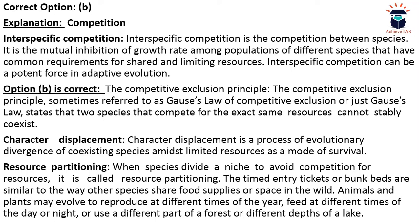In a forest ecosystem, not every species is in constant competition. Resource partitioning takes place in which species change their feeding practices and reproduction practices — for example, one species reproduces in spring and another in autumn, or they reside in different parts of the forest. This is called resource partitioning.